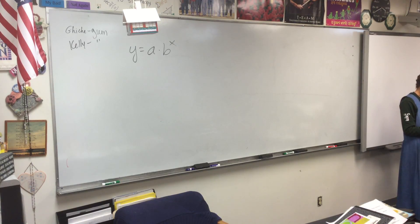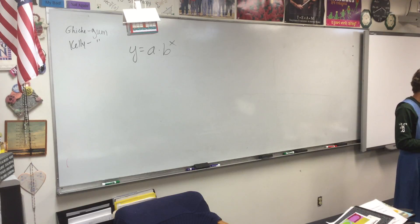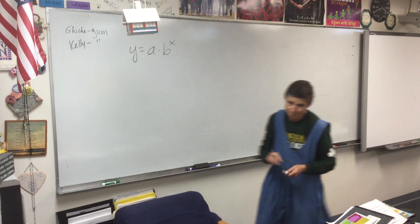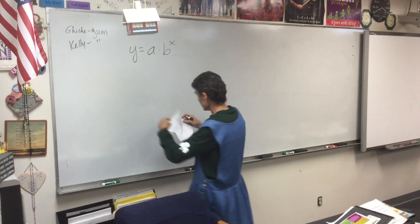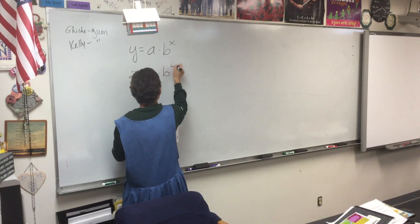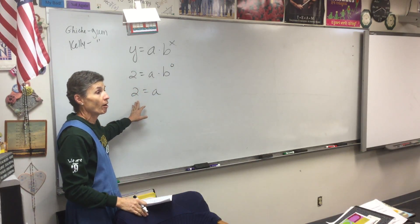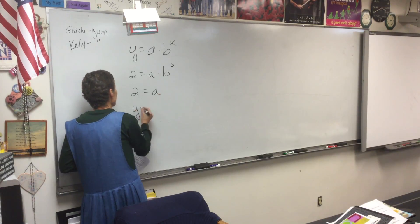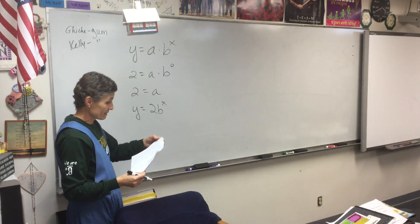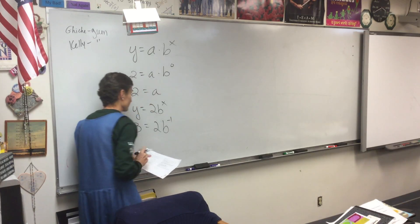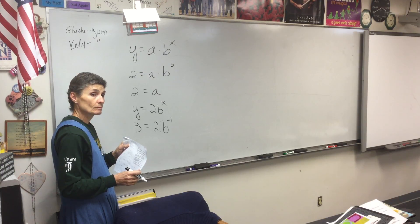I'm putting in the point that's got a zero in it, so 2 equals A times B to the zero, so 2 equals A. We call that our initial value. Now we have Y equals 2B to the X. So we'll plug in the other point, which is negative 1, 3.